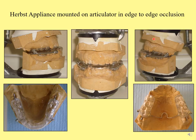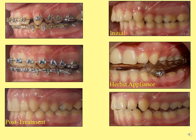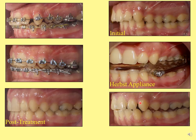A case example: casts are mounted on an articulator in edge-to-edge occlusion using hard thick wax bite registration. A Herbst appliance was inserted; after five months of treatment with expansion, the patient achieved Class I (or near Class I) from Class II. Fixed appliances were then inserted to complete all finishing details, resulting in a good final occlusion.